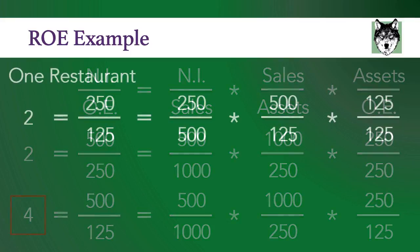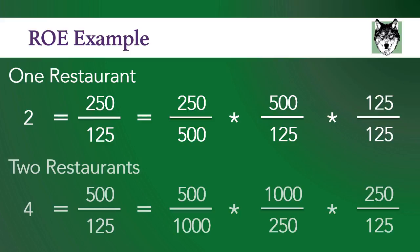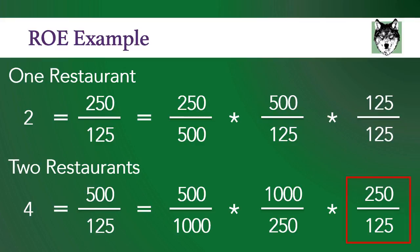Let's use another example. Imagine you have a restaurant with no debt that performs really well. Now imagine you were to open a second restaurant on the other side of town, and instead of using your own money to pay for that new restaurant, you funded it through debt. Now you have two restaurant locations. Assuming the productivity is the same at each location, you just doubled your return on equity without having to invest any more money.